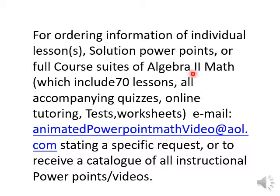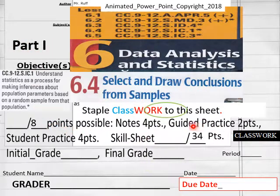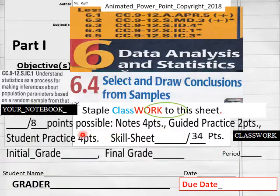Hello everybody. We're getting ready to do 6.4 of Algebra 2: Select and Draw Conclusions from Samples. It's part one of this. Part two and part three are available here. We have 34 points here on the skill sheet, and then we got eight points here of notebook taking.